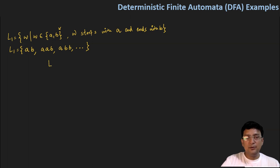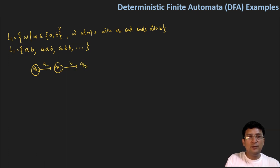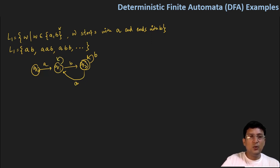Now if I try to draw the DFA for this, it should look like that we have a Q0 state, and with A, I should move to Q1 state. And with B, I should move to Q2 state, which is the final state. If I get a B here at the Q2 state, I should remain at the Q2 state. If I get an A, it is quite possible that I get B again later. If I get A at Q1 state, it means it is like AAB, so that is also acceptable — I should remain at the Q1 state.